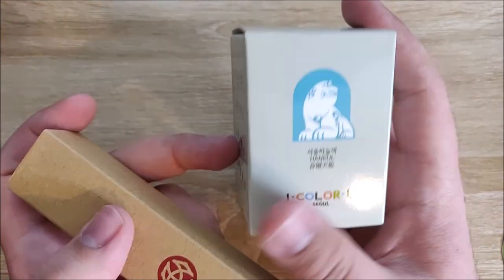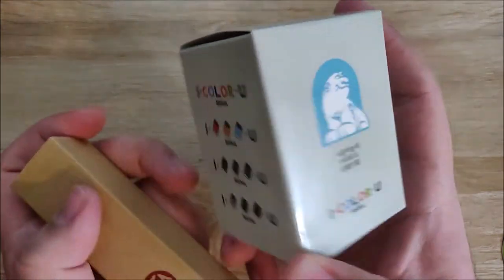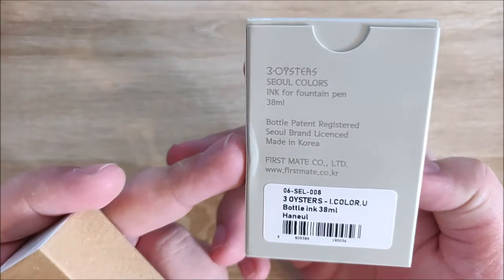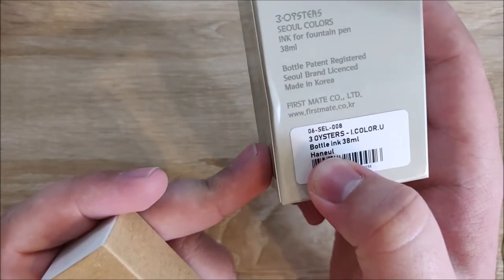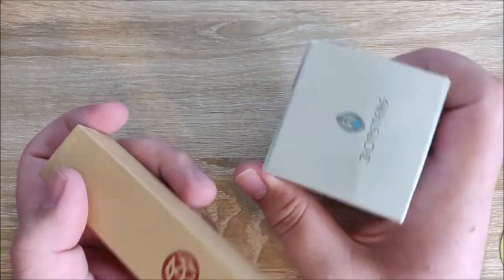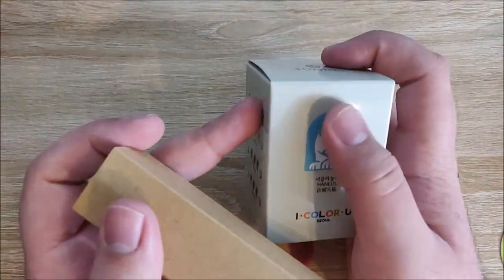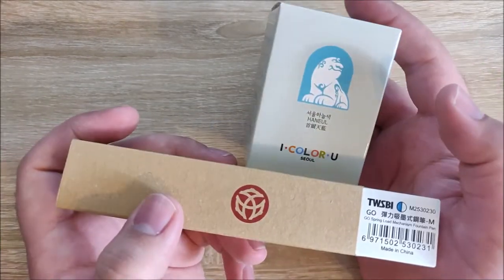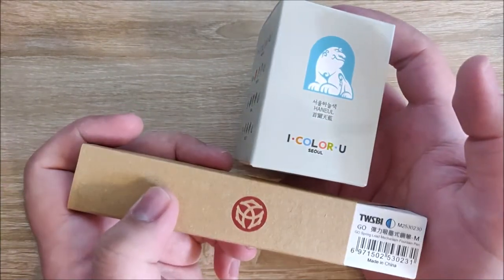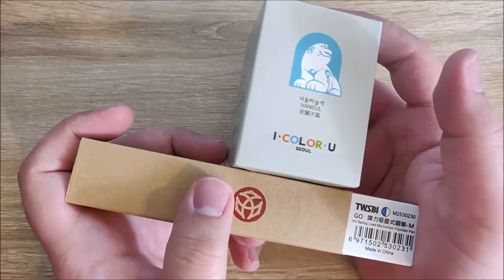Also, you're going to get a Three Oysters Honnul. I have no idea how to pronounce it. I apologize. Yeah, that color right there. It is a gorgeous kind of turquoise color. You can kind of see it there. It's not really that color, but it's pretty close. If you would like these two, the Twisby and the Three Oysters ink, leave a comment for that one.